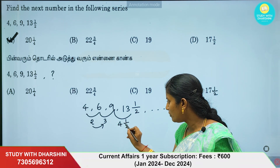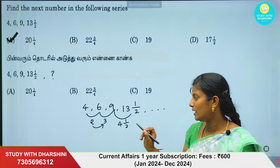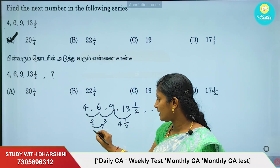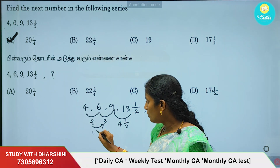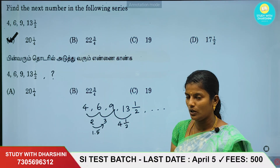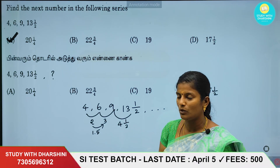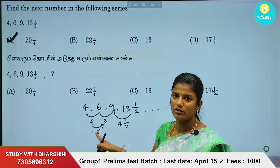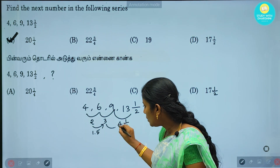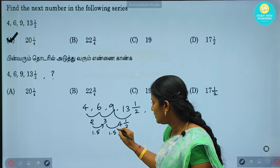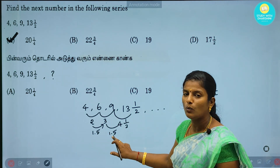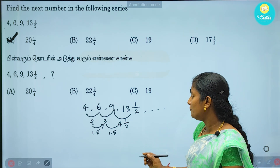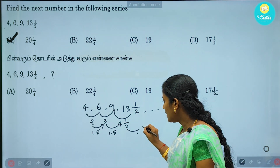Now we have a constant number: 1 and a half. So if we solve this — 2 into 1.5 equals 3, 3 into 1.5 equals 4.5. How do we solve this?